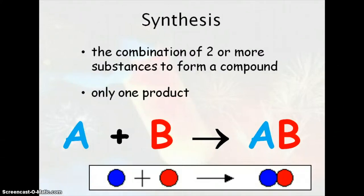Alright, so the next type of chemical reaction we're going to talk about is synthesis. Synthesis is exactly what you think it would mean based on the name. It's the combination of two or more substances to form one product. That's the big key here. You should only end up with one thing on the product side.